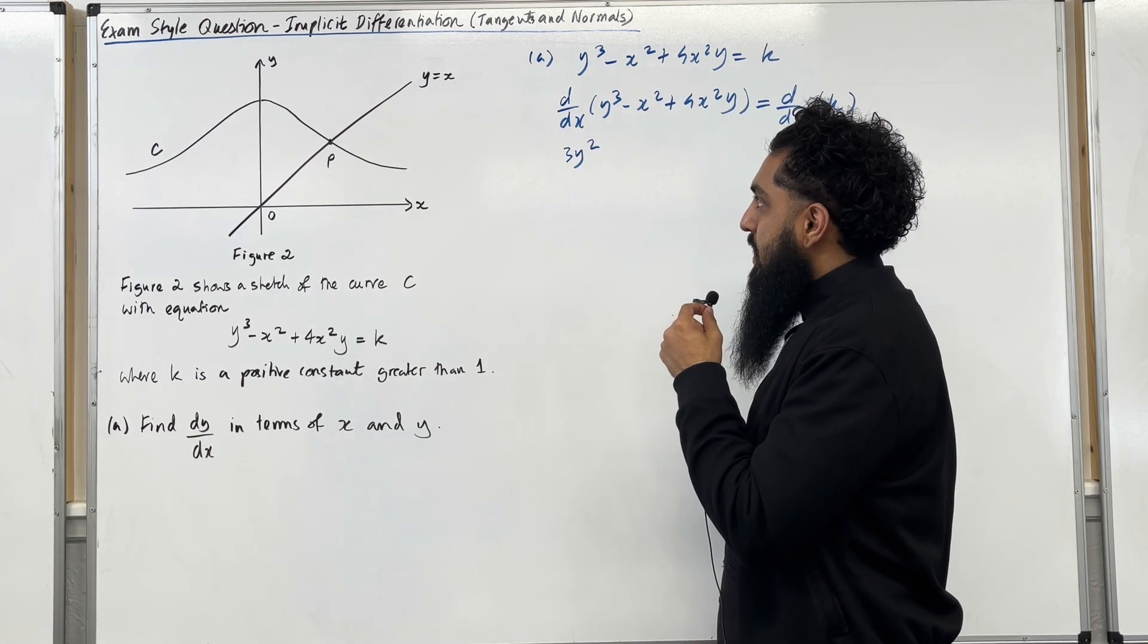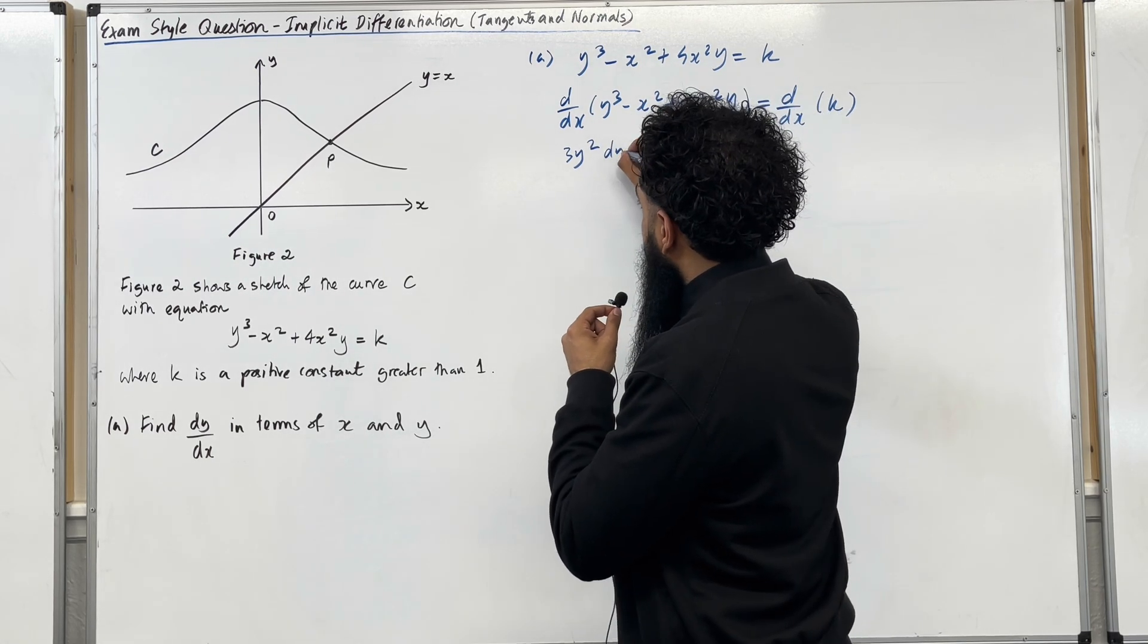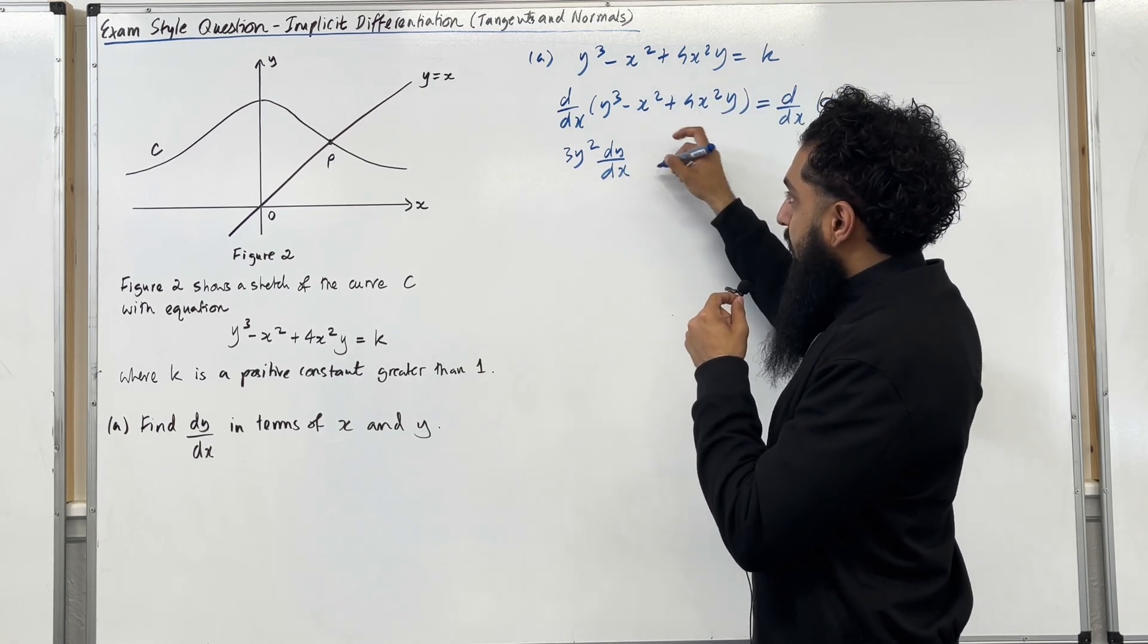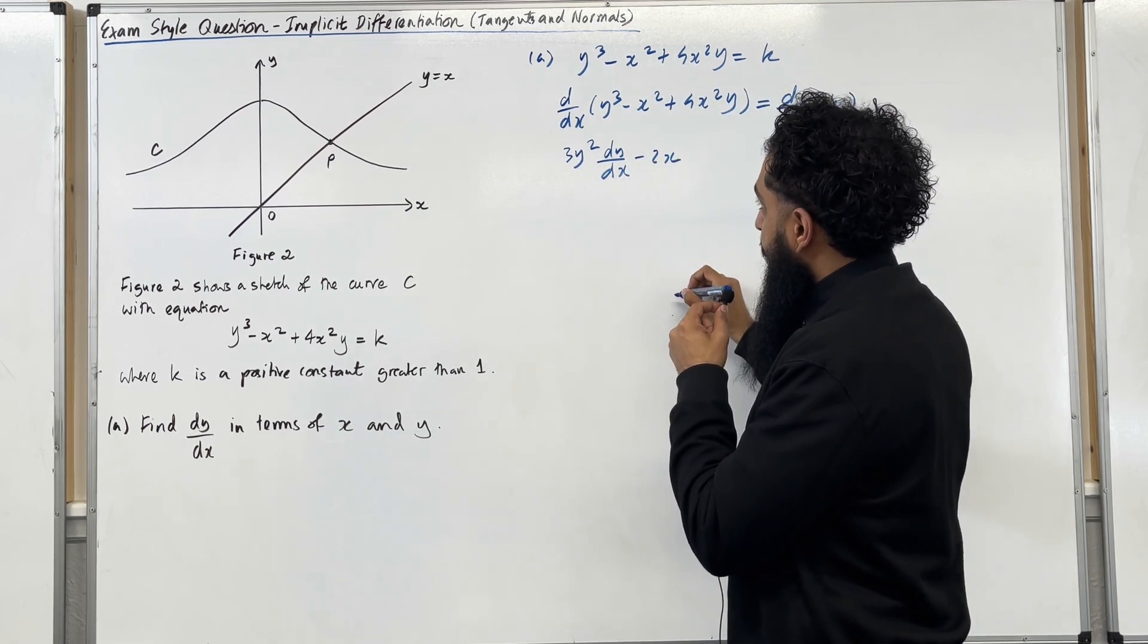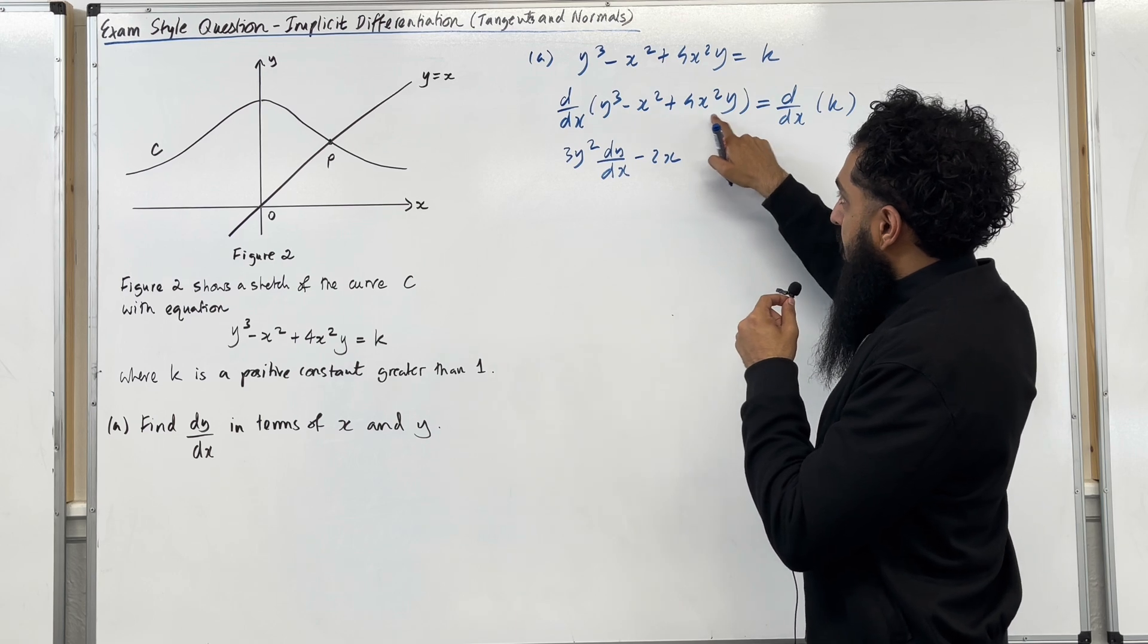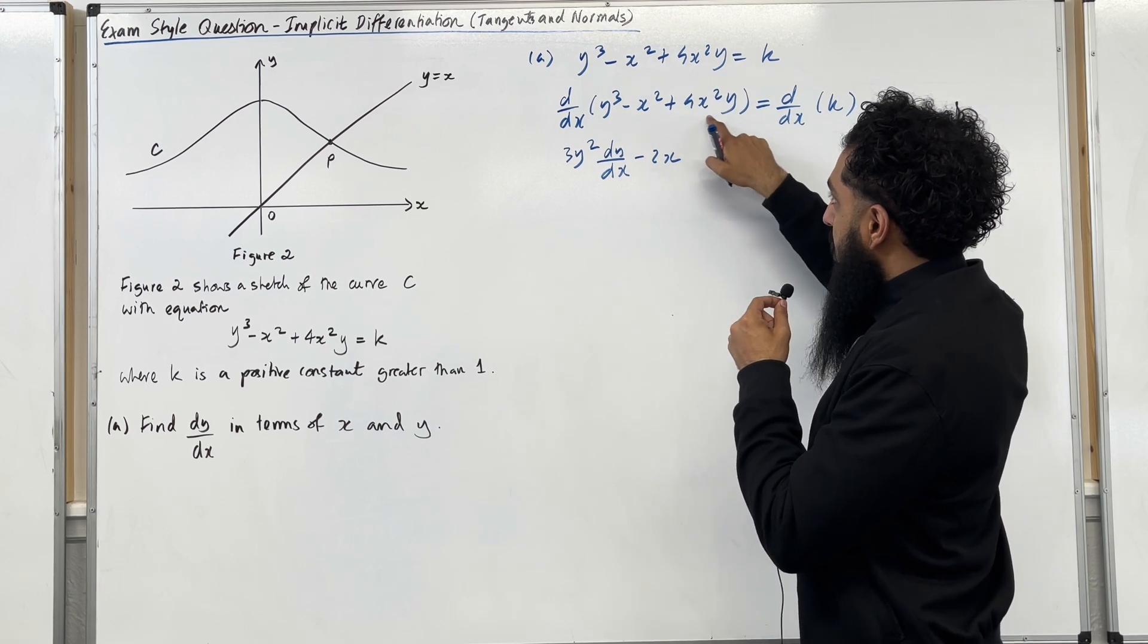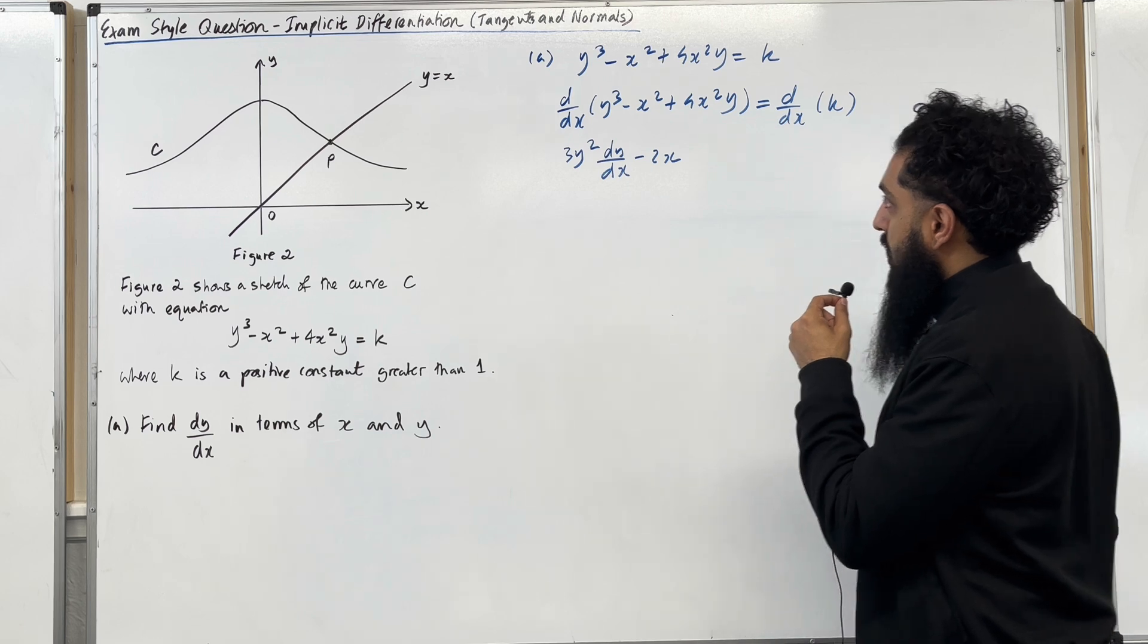Because it's a y term I need to stick in dy over dx. The second term differentiates to minus 2x. In the third term we have a product of two terms, 4x squared multiplied by y. So to differentiate this I need to use the product rule.